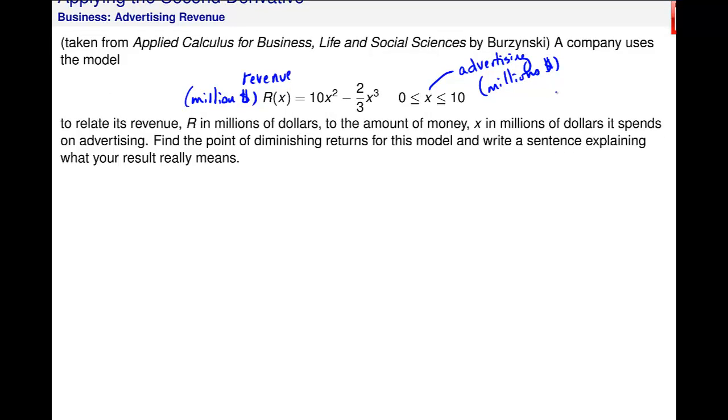So, to find this point of diminishing returns, it is an inflection point. So I go through this process again to find these hypercritical values. So let's find R prime, 20x minus 2 thirds times 3 is just 2x squared. R double prime of x is equal to 20 minus 4x.